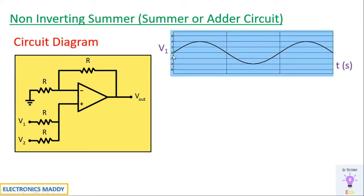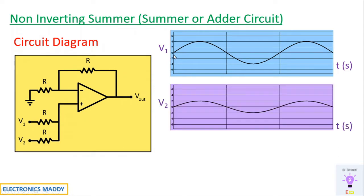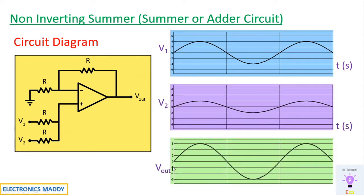We are supplying a sinusoidal signal with a voltage of 4 volts for V1, and V2 is 2 volts. Vout equals the sum of the input values — V1 plus V2 — so you will get 6 volts at the output.